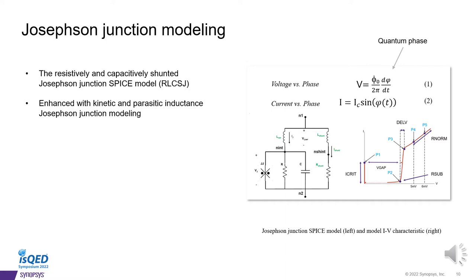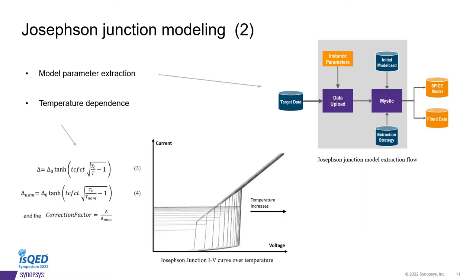For the transition from superconducting to resistance stage, there is a nonlinear relation. We use five unique points, P1 to P5, to model this nonlinear shape. As part of the SuperTools program solutions, we have the model extraction framework using tools called Mystic. So the extraction strategy is very similar to semiconductor as well. You get the measurement data from the fab. We call it target data. You upload it to the system. And you create the extraction strategy. For this software, we use Python to describe the strategy. Then they will try to do the curve fitting for the P1, P2, to P5, the plot we showed in the earlier slide. Then we get the SPICE model.